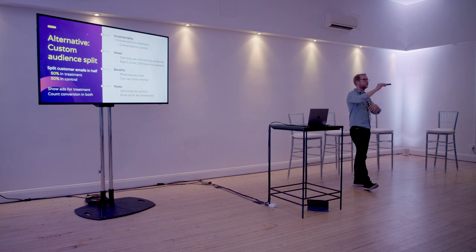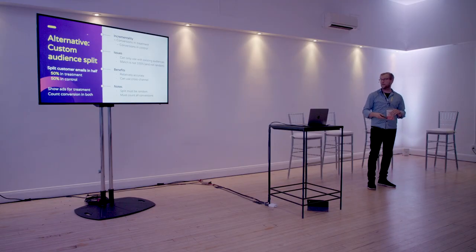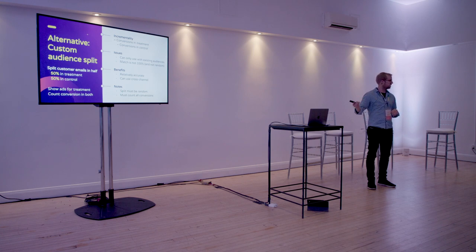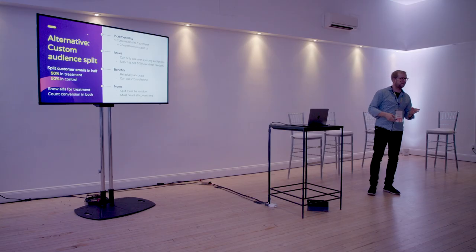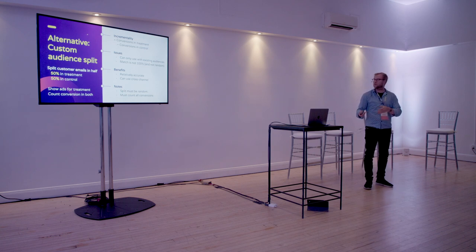The fourth way of measuring lift is a custom audience split. This you can do with remarketing: if you have an email list, you just split it in half yourself, make a custom audience in Facebook from one half, and track all the conversions in your own back end to figure out how many extra conversions you get in the group that sees ads versus those who don't. Some issues: you can only use this with an existing audience. Also, the match rate is not 100% — Facebook cannot match all those emails — and what's even worse is the match might not be random. If Facebook only matches the part of the audience who are not going to buy your product, it looks like there is absolutely no lift, even though the people Facebook cannot match might be buying.